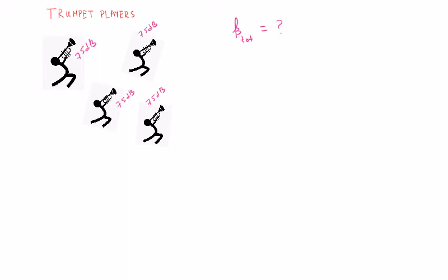But we know that the total intensity will multiply four times that of only one trumpet. Knowing the intensity level of one trumpet, we can find the intensity to be 10 log intensity of one trumpet over the threshold of hearing.